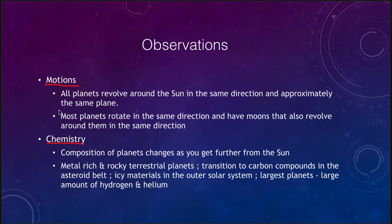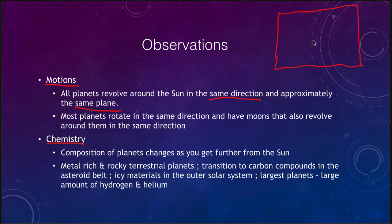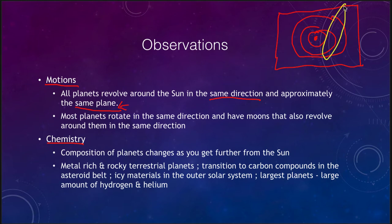First of all, we see that all of the planets revolve around the Sun in the same direction and in approximately the same plane. When you draw a model of the solar system on a piece of paper, it's a very good approximation of what the solar system actually looks like — a Sun at the center with planets orbiting around it. That flatness is what we mean by being in the same plane. Planets don't come in and out at random directions above or below the Sun, like comet orbits do.